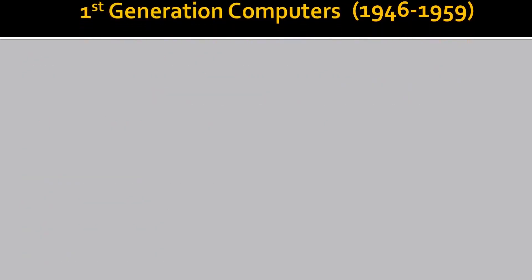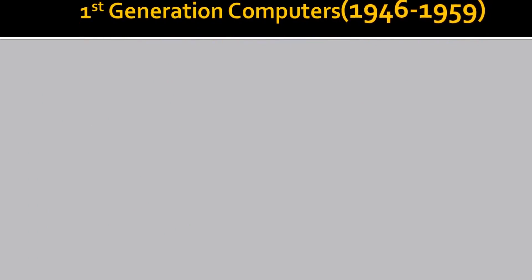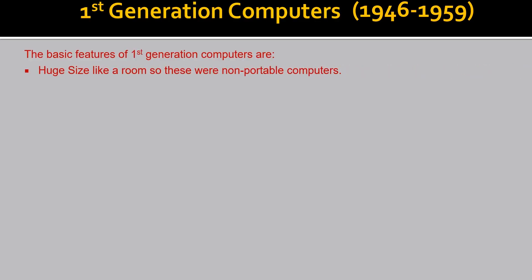1st generation computers were used from 1946 to 1959. The basic features of 1st generation computers were that they were of huge size — like a room. Because of their huge size, they were non-portable.